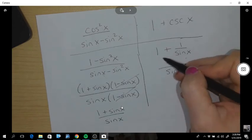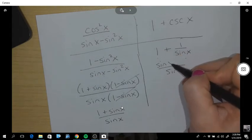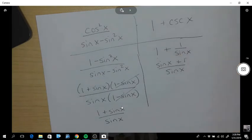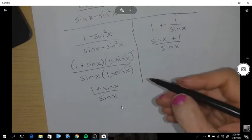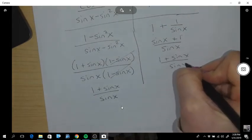So, then if I multiply this by sin x on the bottom I have to multiply it by sin x on the top. And now I've proven that the left hand side equals the right hand side.